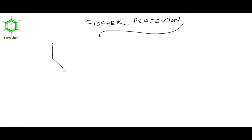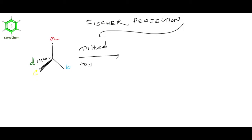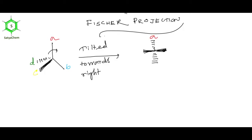This is the flying wedge representation. A solid line represents it is in the plane of the paper. A bold line represents it is above the plane of the paper. A dashed line represents it is below the plane of the paper. If I tilt this molecule towards the right, then A and B move below the plane of the paper and C and D move above the plane of the paper.